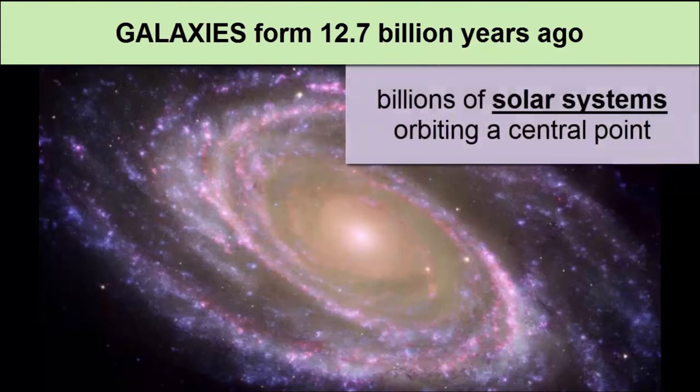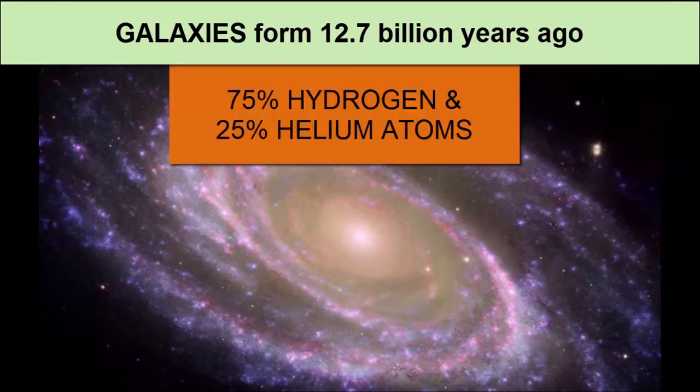Now imagine you have billions of these solar systems developing from the massive amounts of gas in the early universe. Each system will feel gravitational attraction to the other systems around it, and they will clump together in collections of solar systems called star clusters or galaxies, depending on the number of stars and shape of the collections. So now we have stars, solar systems, and galaxies.